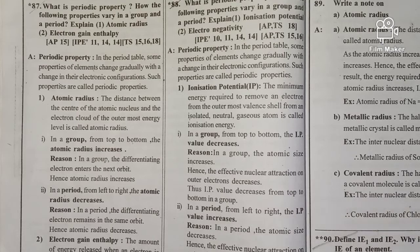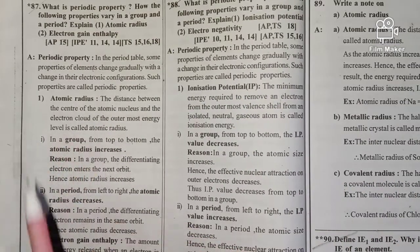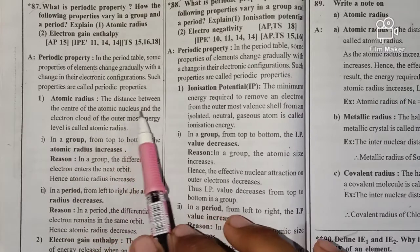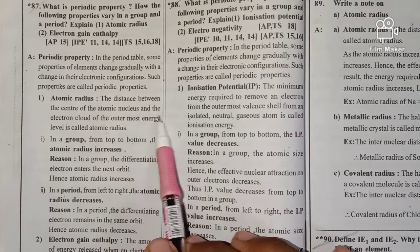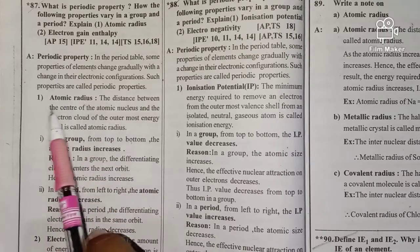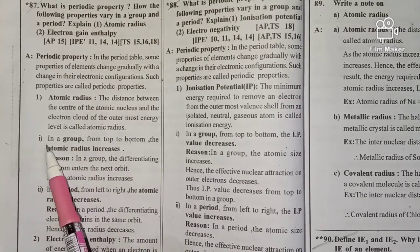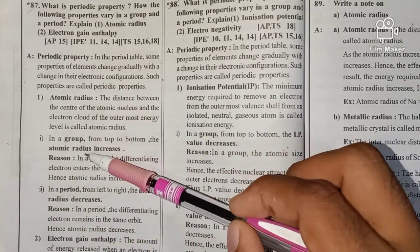For example, hydrogen has atomic number 1 and its electronic configuration is 1s¹. The atomic radius is the distance between the center of the atomic nucleus and the electron of the outermost energy level. This is called atomic radius.